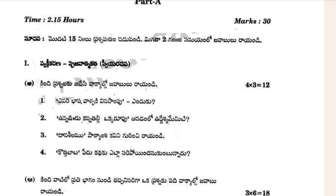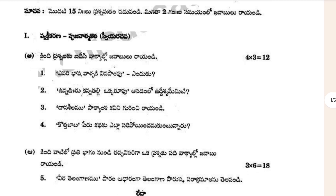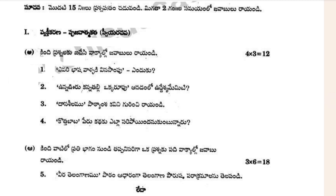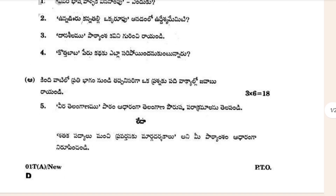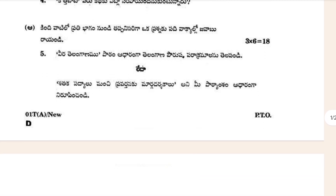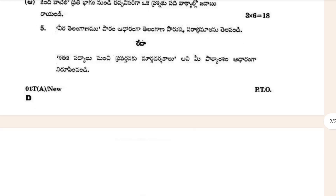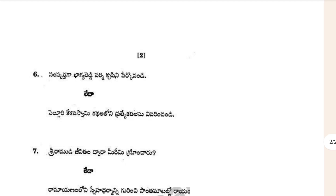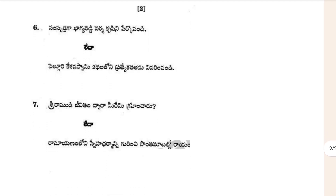In Part 1, there are four questions given which are related to three marks — four into three, that's 12 marks. After that, there is a three-mark question section and a six-mark question section containing three questions, so three into six equals 18 marks. You can write any one question in that section.